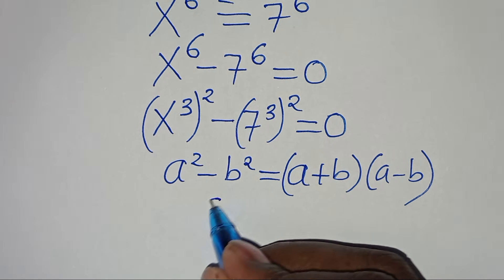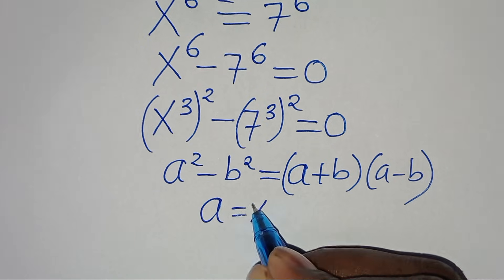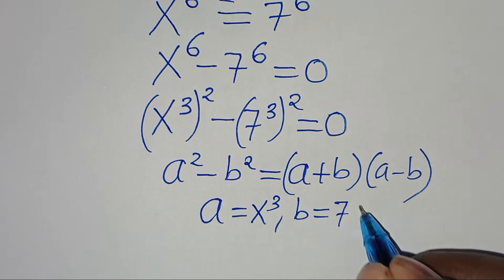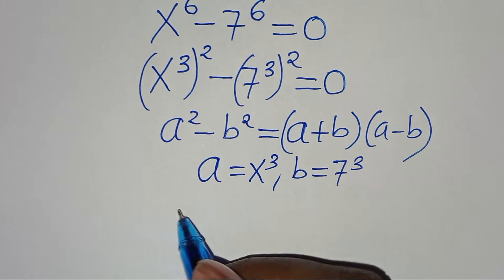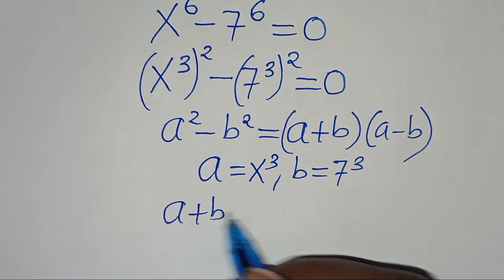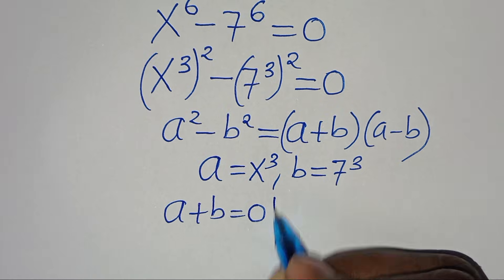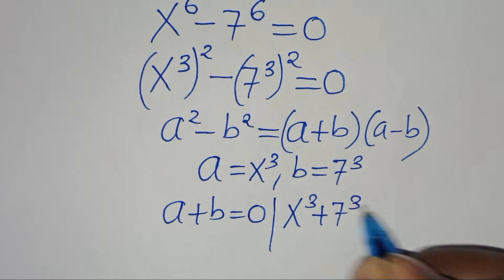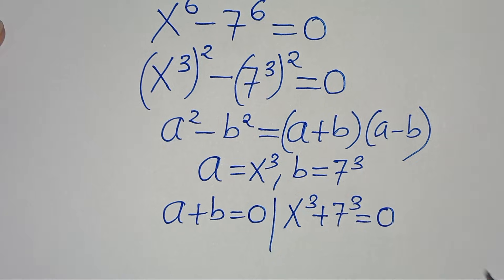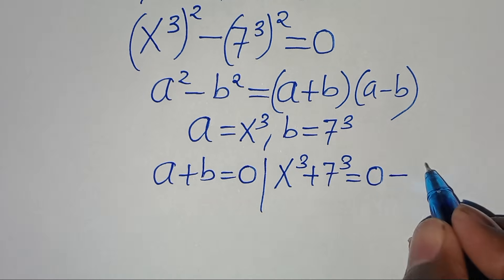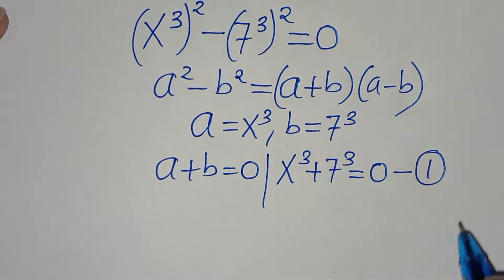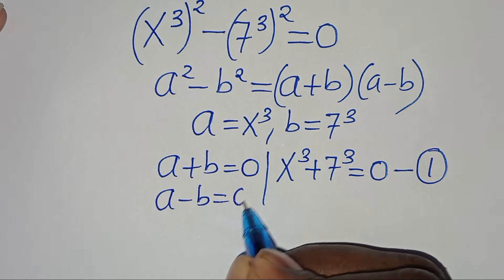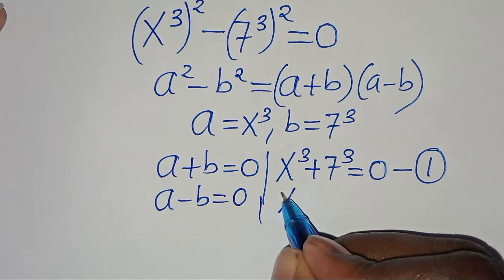Applying this property, we have that a is equal to x to the power of 3, b is equal to 7 to the power of 3. So a plus b equals 0, which is the same thing as x to the power of 3 plus 7 to the power of 3 equals 0 — let's call this Case 2. And a minus b equals 0, which gives us Case 1.